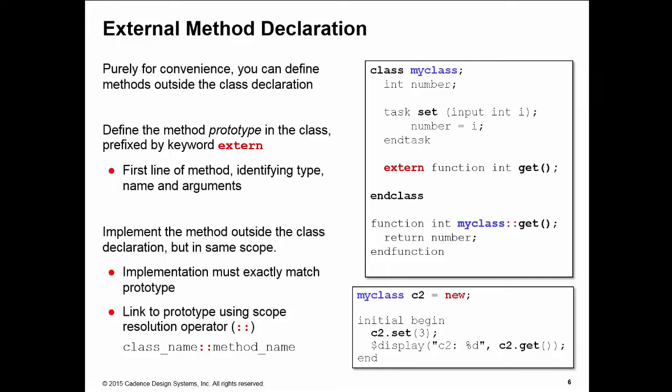The reason why we do this is for readability. By declaring all your class methods using externs, it allows the user to quickly and easily see what methods are allowed for a particular class without having to wade through pages of implementation. It has no effect on the simulation, it's just a readability hack.